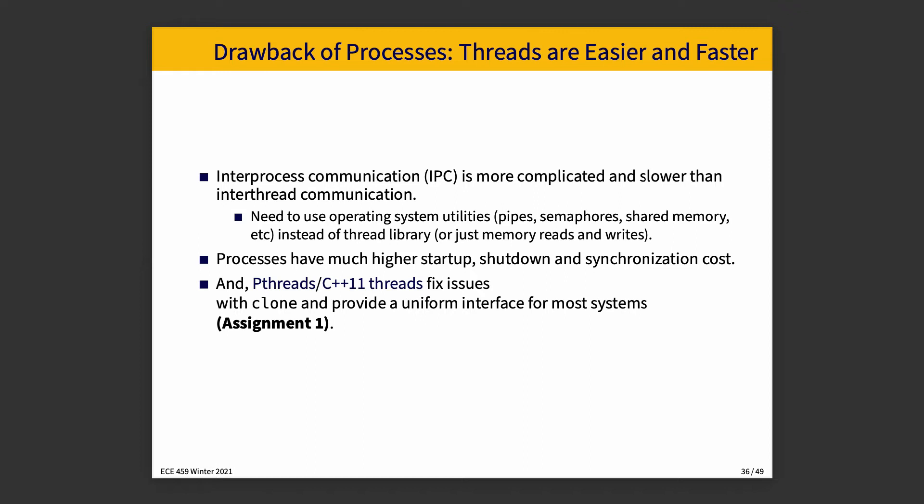There are drawbacks. Inter-process communication is a lot more complicated and slower than inter-thread communication — you have to use OS utilities like pipes, semaphores, and shared memory, rather than a thread library. With threads, since everything is in the same process space, memory reads and writes are very simple. You still coordinate with mutexes or semaphores, but it's certainly less work than asking the OS to create a message-passing queue for you, which involves system calls on both the sending and receiving sides.